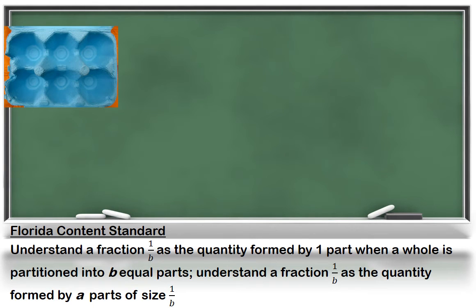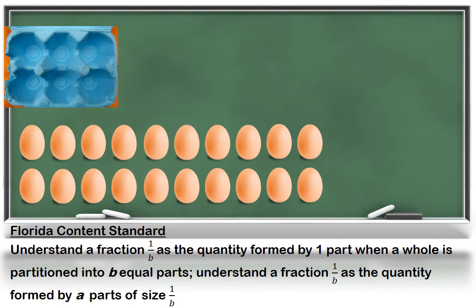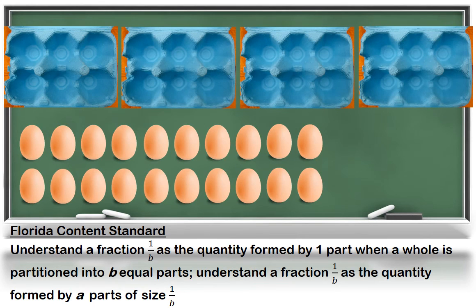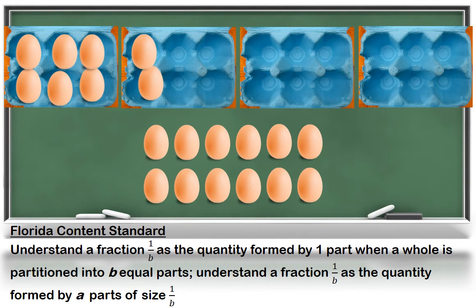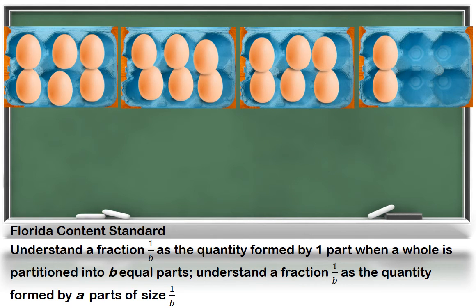Look at these egg cartons. It takes six eggs to fill a whole carton. If I have twenty eggs, how many cartons can I fill? I can fill three whole cartons and I have two sixths of the last carton. So we represented the fraction twenty sixths or three wholes and two sixths.